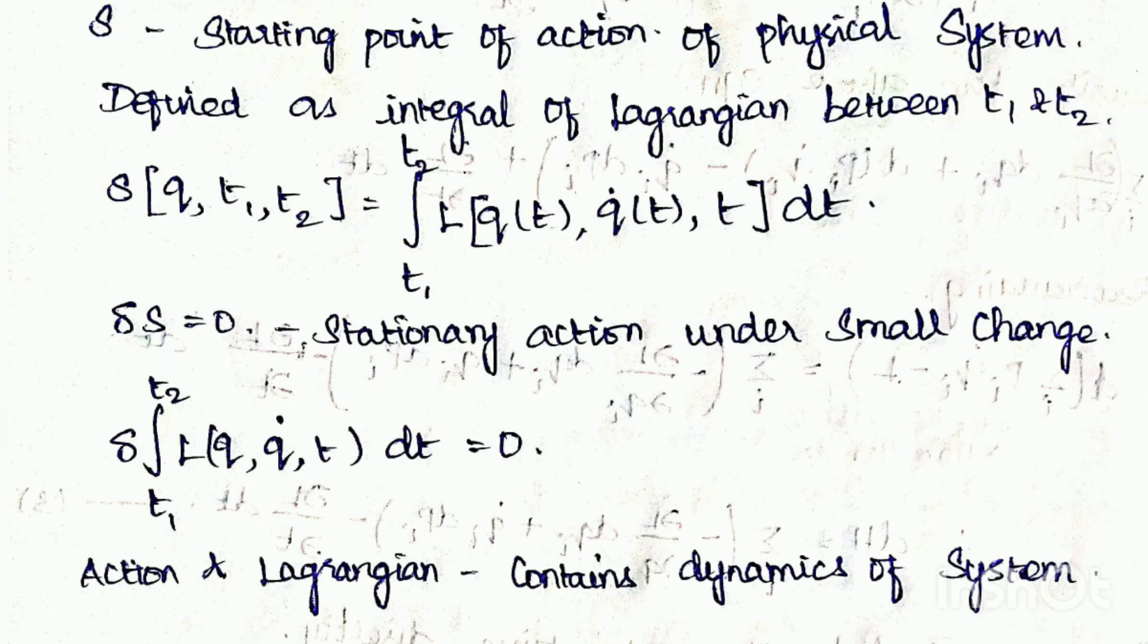The Kronecker delta in the final equation represents the small change. Therefore, we can say action and Lagrangian contain the dynamics of the system.